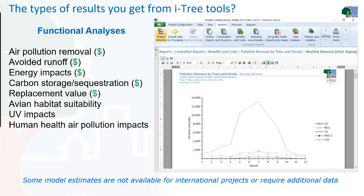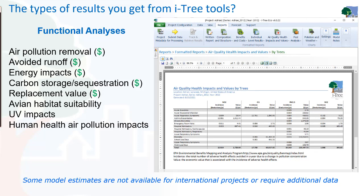This is an example of the functional analysis available in some iTree tools. Typically in many of the online tools you'll find pollution removal, carbon storage, hydrology effects, and in some cases energy effects depending on the data provided. A tool like iTree Eco goes beyond that with many newer models available, including human health and air pollution impacts — though this is not available for all tools or international projects where the necessary data isn't available. It gives you a good idea of the structure and functional analysis available in these tools.